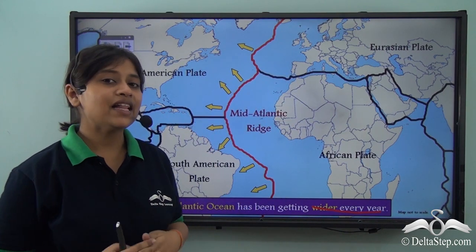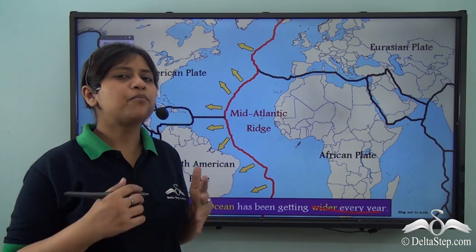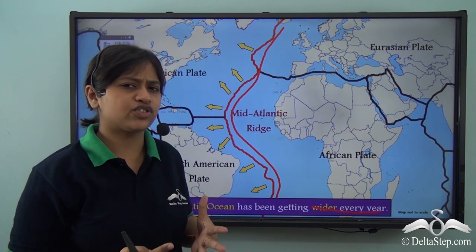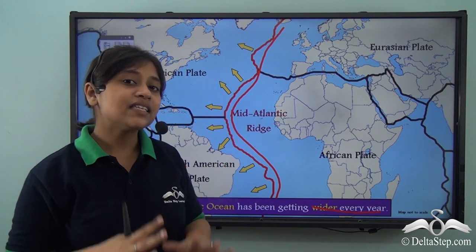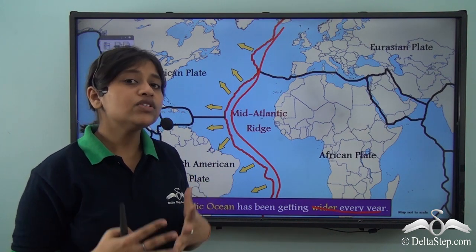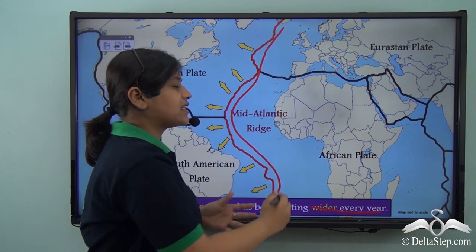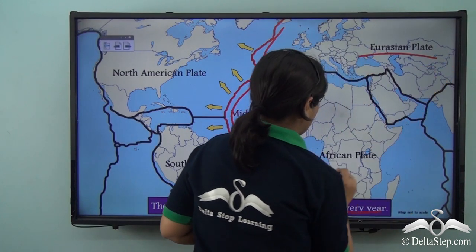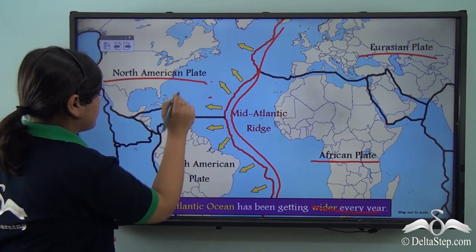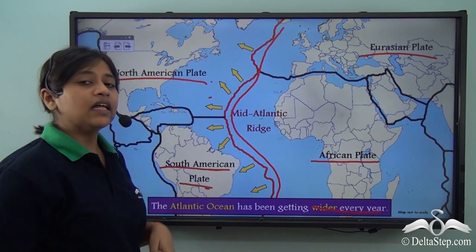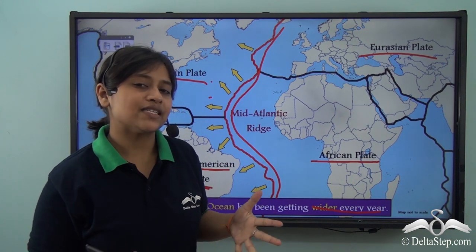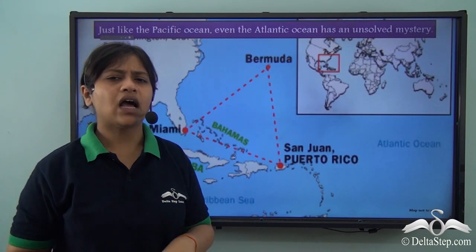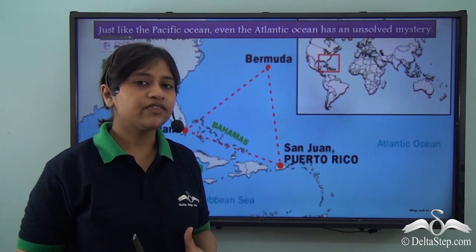Did you know that the Atlantic Ocean is getting wider every year? This is because of the presence of the mid-Atlantic Ridge right at the center of the Atlantic Ocean. This ridge is at the seabed, and due to the oozing out of magma along it, it is pushing away the Eurasian plate and the African plate from the North American plate and the South American plate. This is why the Atlantic Ocean is getting wider every year.